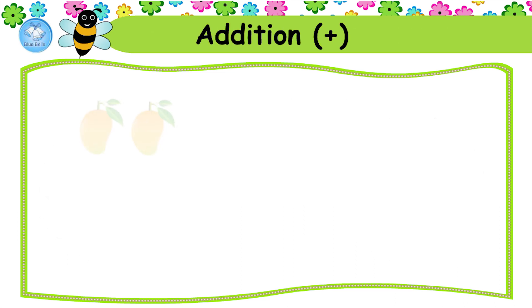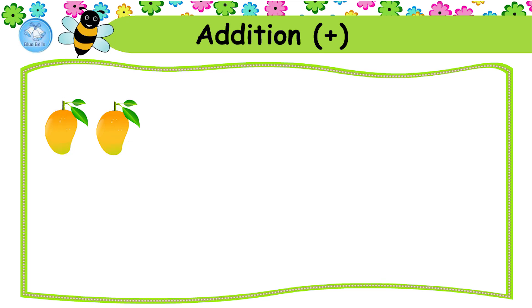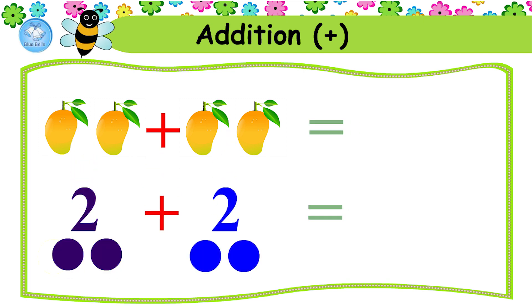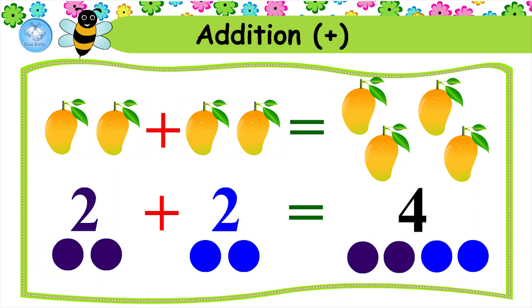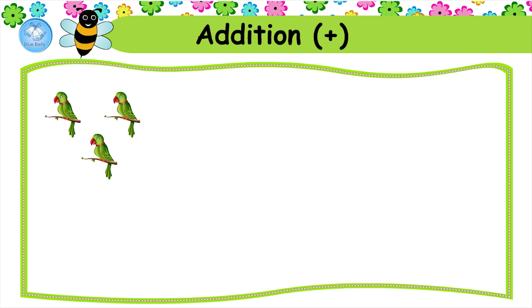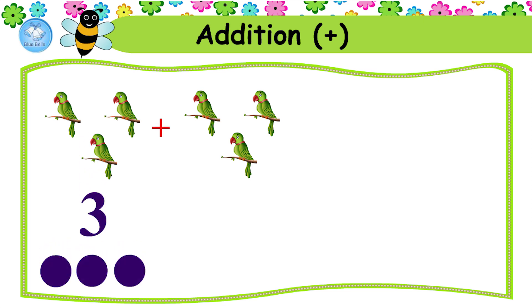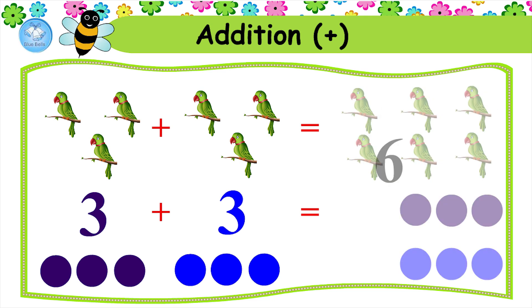Addition. Here we have two mangoes. Let's count: one, two. Here we have another two mangoes. Let's count: one, two. Let's add: two mangoes plus two mangoes equals four mangoes. Here we have three parrots. Let's count: one, two, three. Here we have another three parrots. Let's count: one, two, three. Three parrots plus three parrots equals six parrots.